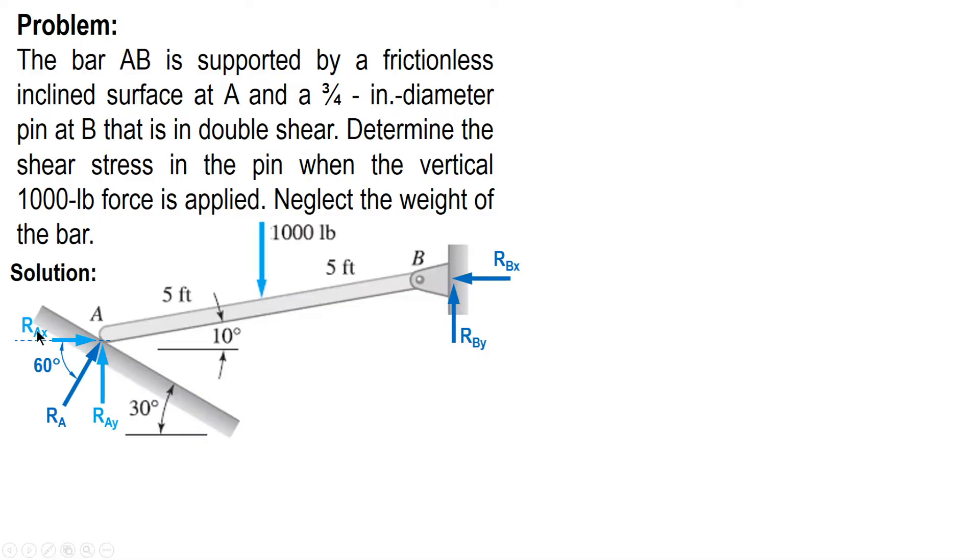Now, we can express RAx and RAy in terms of RA. That is, RAx is equal to RA cosine 60, since the angle is referenced horizontally. So RAx is RA cosine 60 while RAy is RA sine 60. What we're going to do is to sum up moment about B so that we can solve for RA.